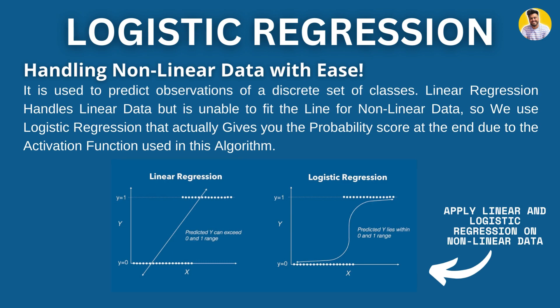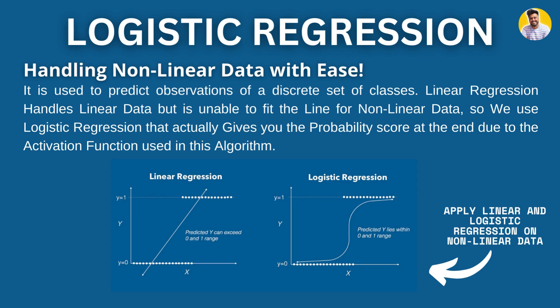So if we just add an activation function to the linear regression, then it is called logistic regression. We can use logistic regression to predict this kind of data that you see on the screen, where Y is equal to zero and Y is equal to one. In that kind of data, linear regression will not work. We need to skew the line so that it can be easily fit to the data. To bend the line to fit that data, we need an activation function. When we pass our linear regression output to the activation function, we get the logistic regression, and then the line perfectly fits the data.